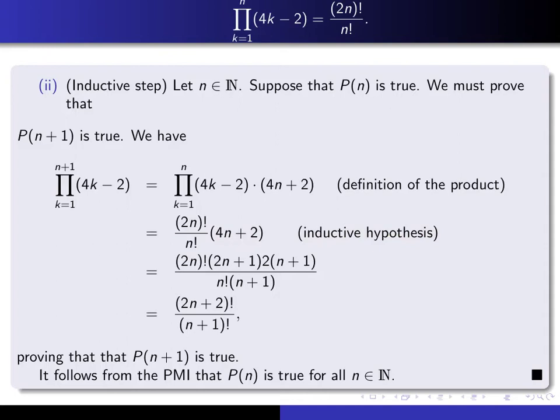Now, we need to somehow get... What is it? We want to get this thing here where n is replaced by n+1. 2 times n+1 is 2n+2. So we're really trying to get a 2n+2 factorial somehow in the picture. And we're also trying to get an n+1 factorial in the bottom.